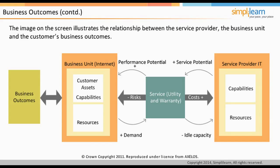The performance potential of the service indicates what utility and warranty the service will have. This indicates, in business unit terms, the performance that the service will be capable of. The business unit can then determine whether that will be suitable to enable its customer assets to produce the desired level of outcomes. The more the utility and warranty, the higher the performance potential.